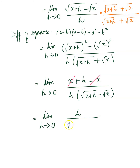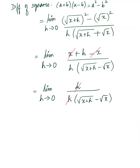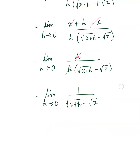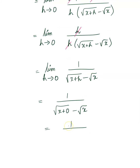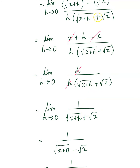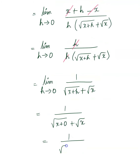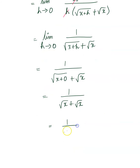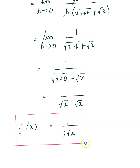You could have cancelled it in the same step, understanding that you're doing two steps in one. Plug in h as 0, so we get square root of x plus 0 plus square root of x in the denominator — note it's a plus there. And then we have 1 over 2 square root of x. So f prime of x gives us 1 over 2 square root of x. This was part A — the derivative of f of x, which was square root of x.